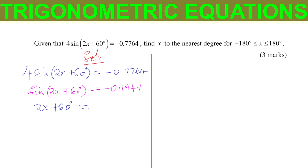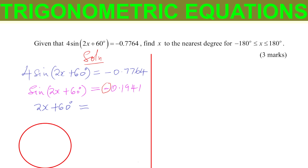There's something important to explain about this negative. In the unit circle with 4 quadrants, the negative value implies where we are going to get these angles. Sine is negative in the third quadrant and also in the fourth quadrant — that is where our angles will be located.